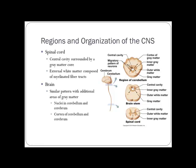The CNS is broken into the spinal cord and the brain. With the spinal cord, there's a central gray region with outer white matter. With the brain, it's similar, but there are little areas of gray matter — those will be nuclei found in the cerebellum, cortex, and cerebrum.